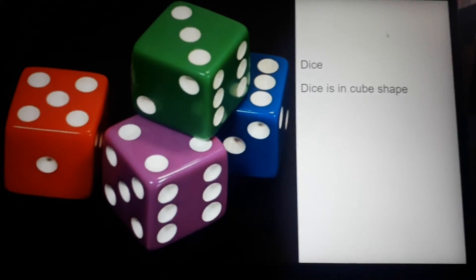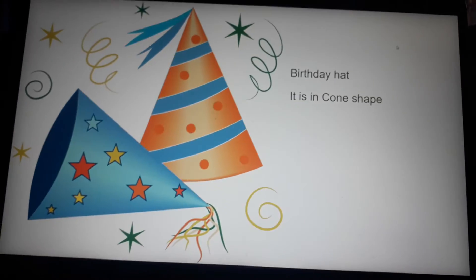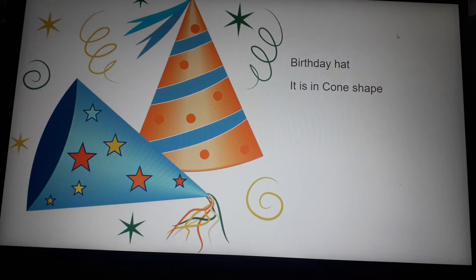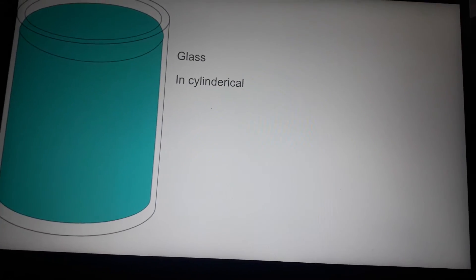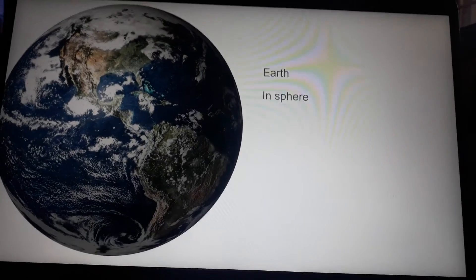Geometry in real life: dice in the cube shape, birthday hat in cone shape, glass in cylindrical shape, earth in sphere.